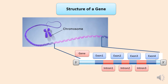Now let's look at the structure of a gene. Generally, human genes contain alternating coding areas and non-coding areas. Coding areas are called exons and non-coding areas are called introns. They are labeled from the 5' end to the 3' end as exon 1, 2, 3, 4 and introns 1, 2, 3, 4.